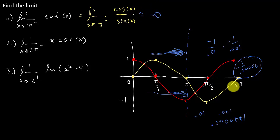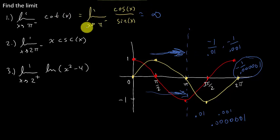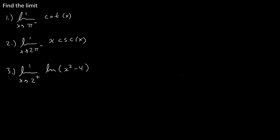I know this was more involved — it was a lot easier just to sketch cotangent. But I think it's good that you understand it this way also. So let's look at the next problem: the limit of x times cosecant x as x approaches 2π from the left.